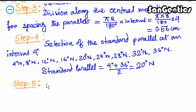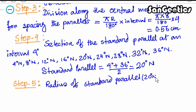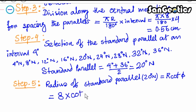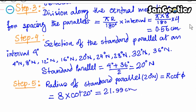Step 5: Radius of the standard parallel equals r × cot(φ). Using the formula, r × cot(φ) = 8 × cot(20°) = 21.99 cm. This is the radius of the standard parallel at 20° North.